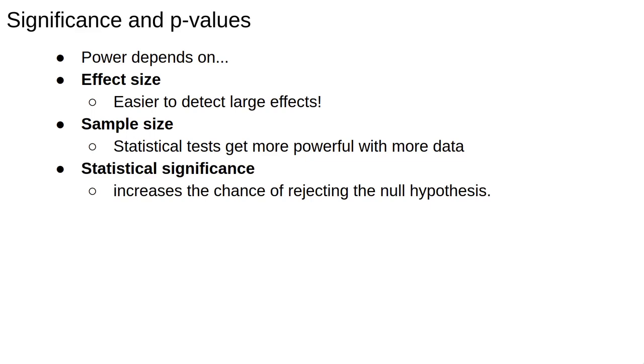If we increase the significance threshold, say from 0.01 to 0.05, which increases the chance of rejecting the null, this affects the probability to accept the alternative, and hence how easy it is to detect an effect.